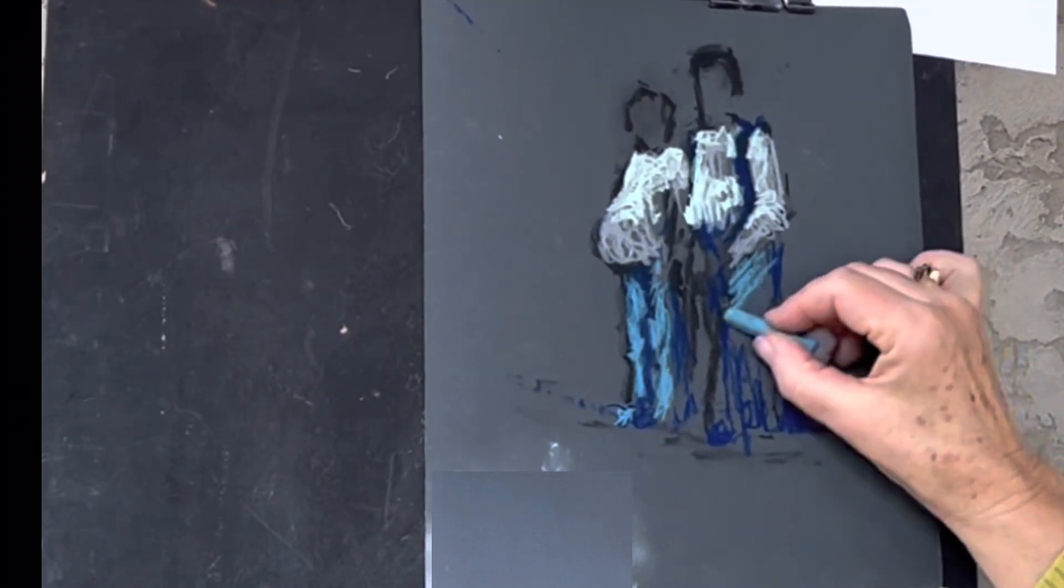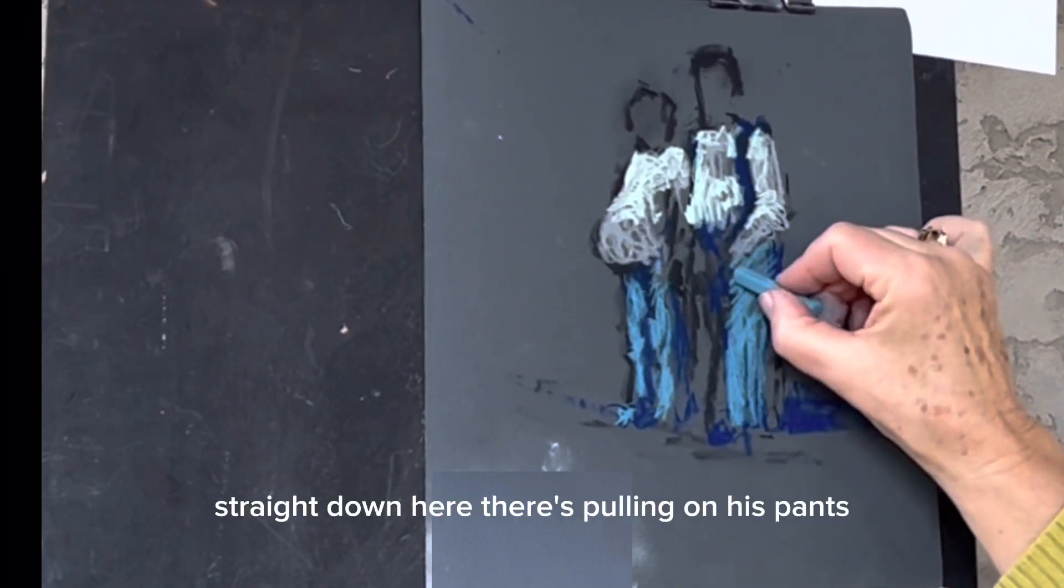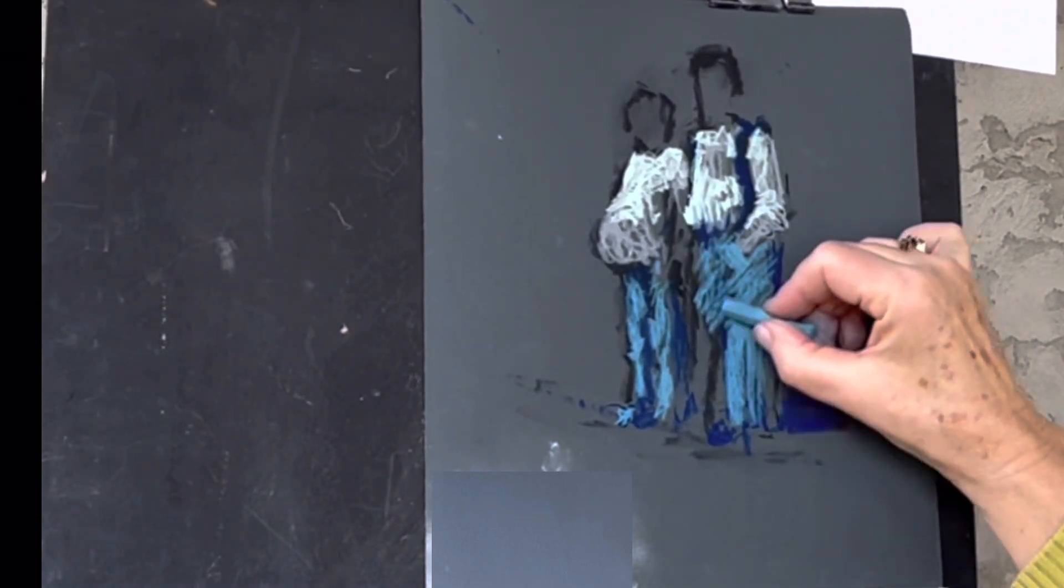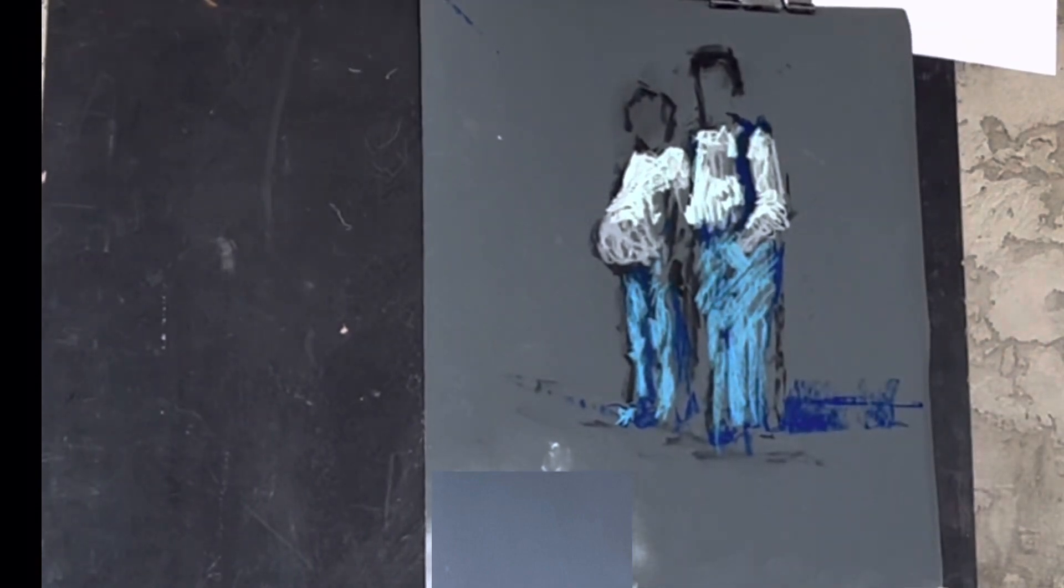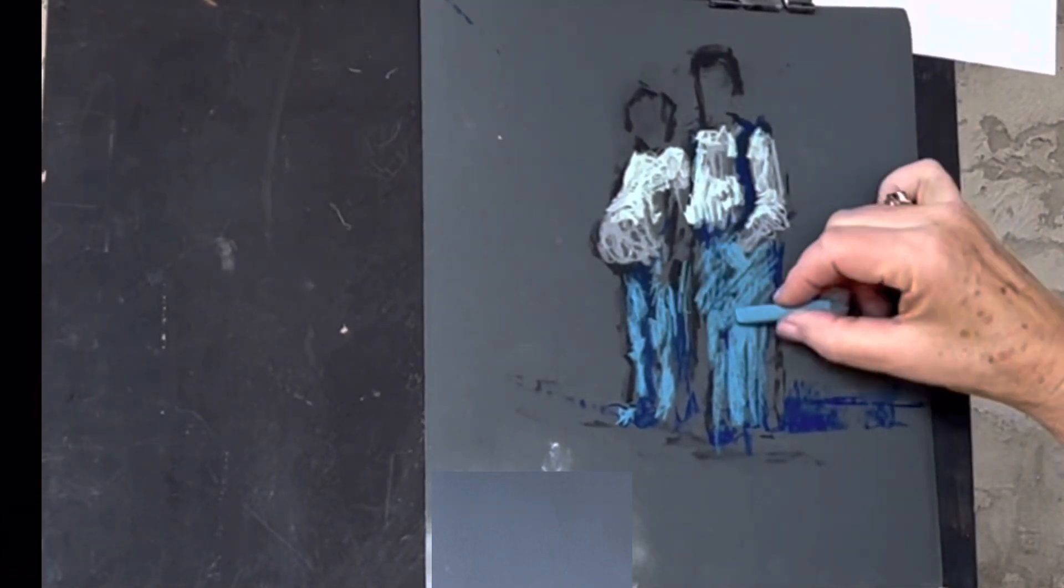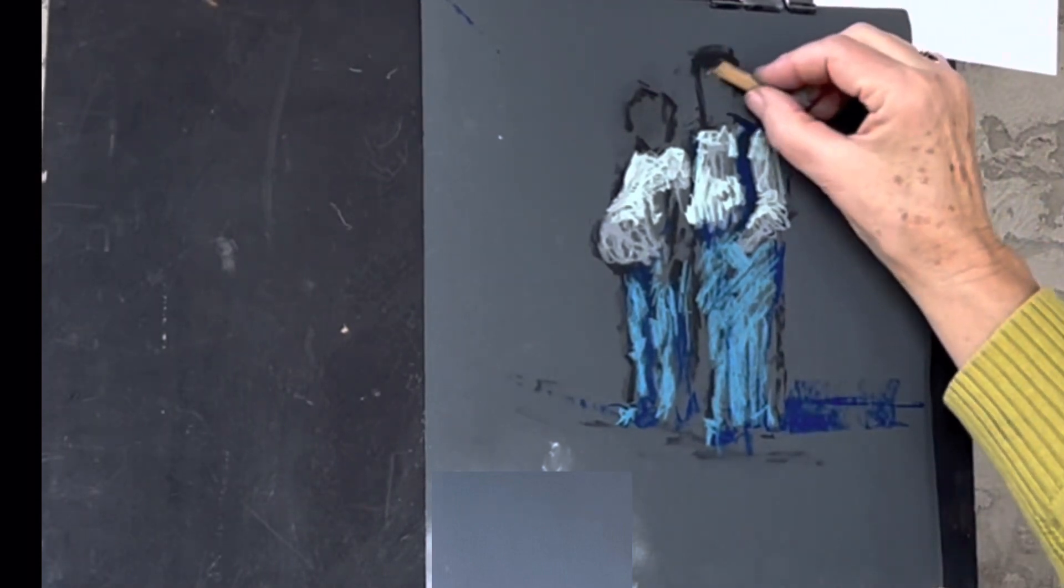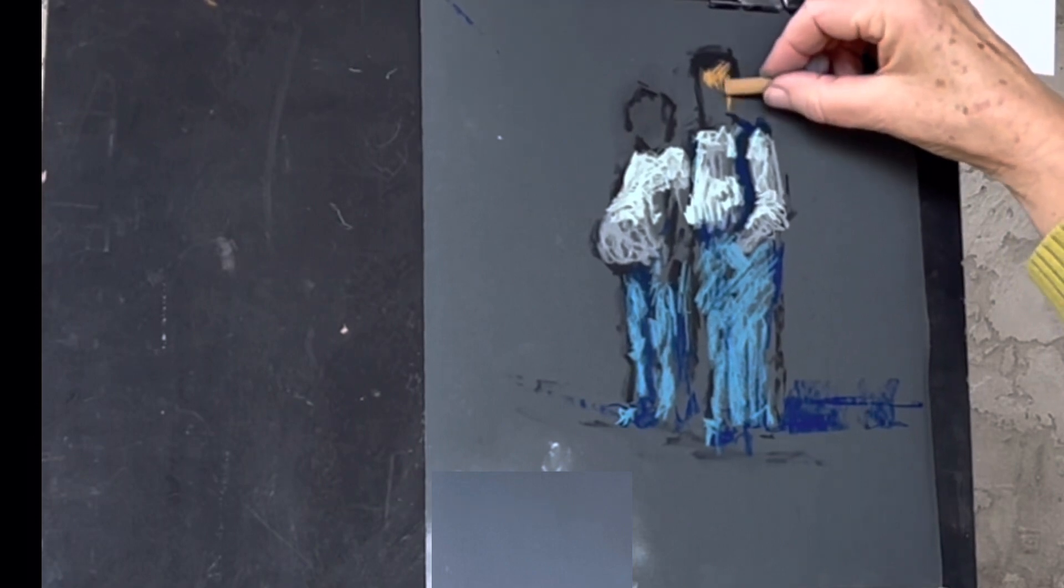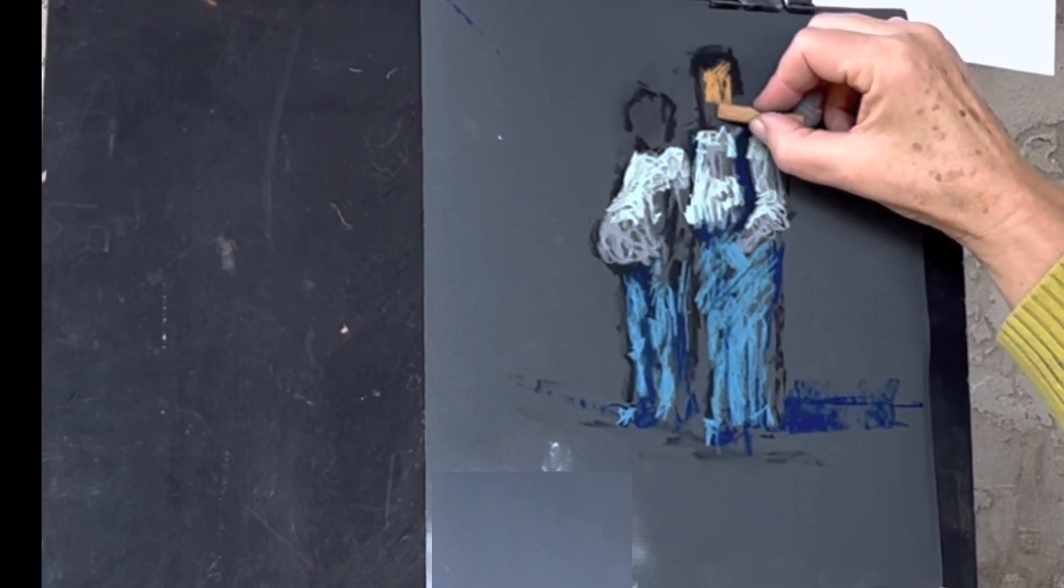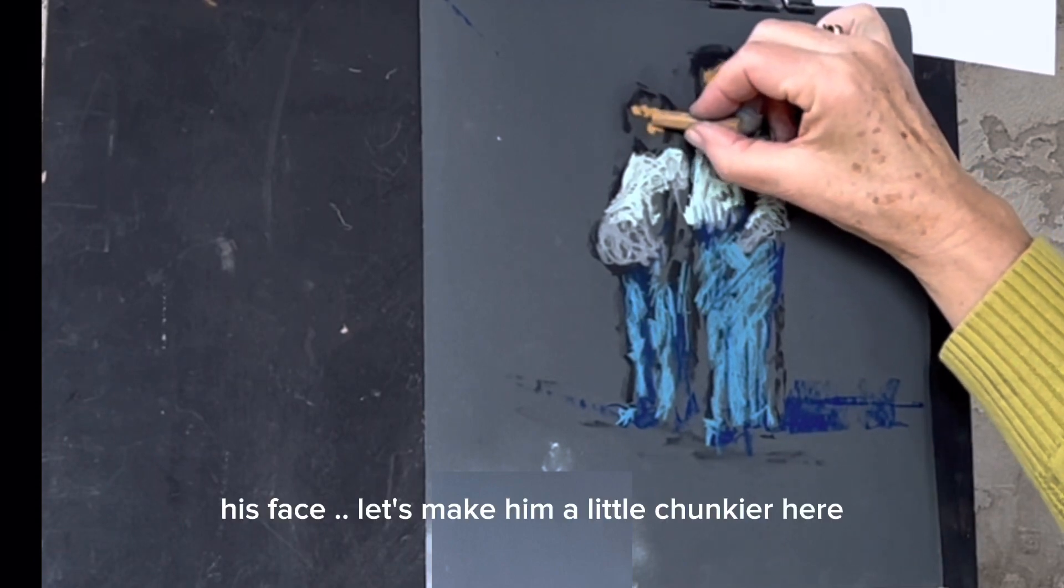Straight down here, there's pulling on his pants. Kind of lost the separation between his pant legs, but we'll pull that back in momentarily. The structure of the face, the cheek, the side of the nose, his face. Let's make him a little chunkier here.